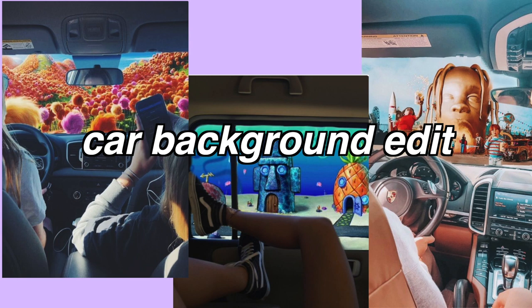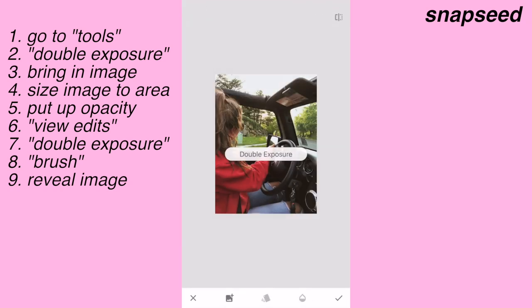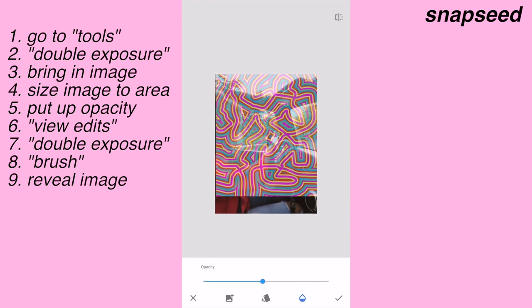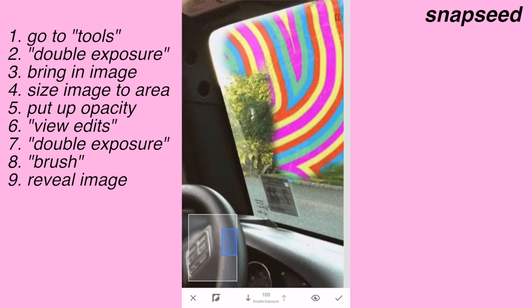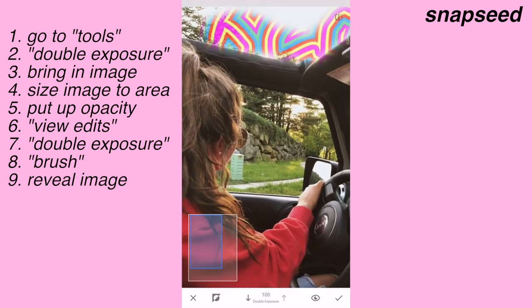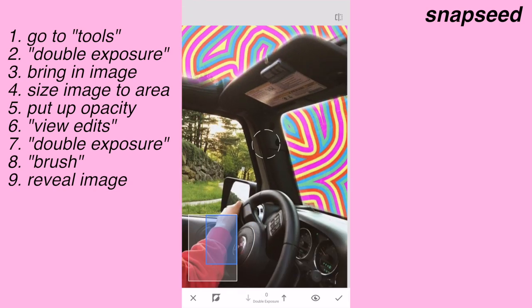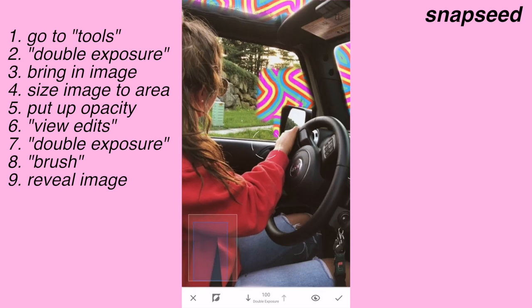The next edit is the car background type of thing where people put pictures in the car. This is actually the exact same technique as the glitter bikini — it's the same double exposure feature on Snapseed. I'm bringing in a fun picture — this is not a picture of me, I don't own a Jeep. But you just do the exact same thing: find a picture, shape it over the area you want, then do the brush, double exposure, and color it in — just color in the window parts of the car. It is the exact same technique as the glitter bikini.